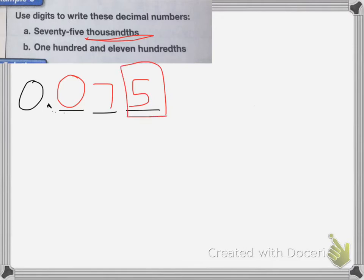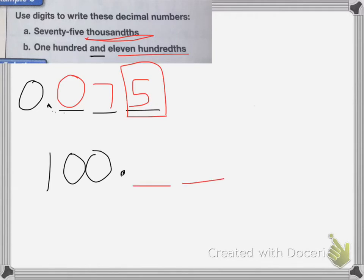For the next one, it's 111 hundredths. The word 'and' is my decimal point, so I have 100, decimal, then 11 hundredths. I fill in the tenths and hundredths places with 11, giving 100.11. So that's 111 hundredths, and that's it for the lesson.